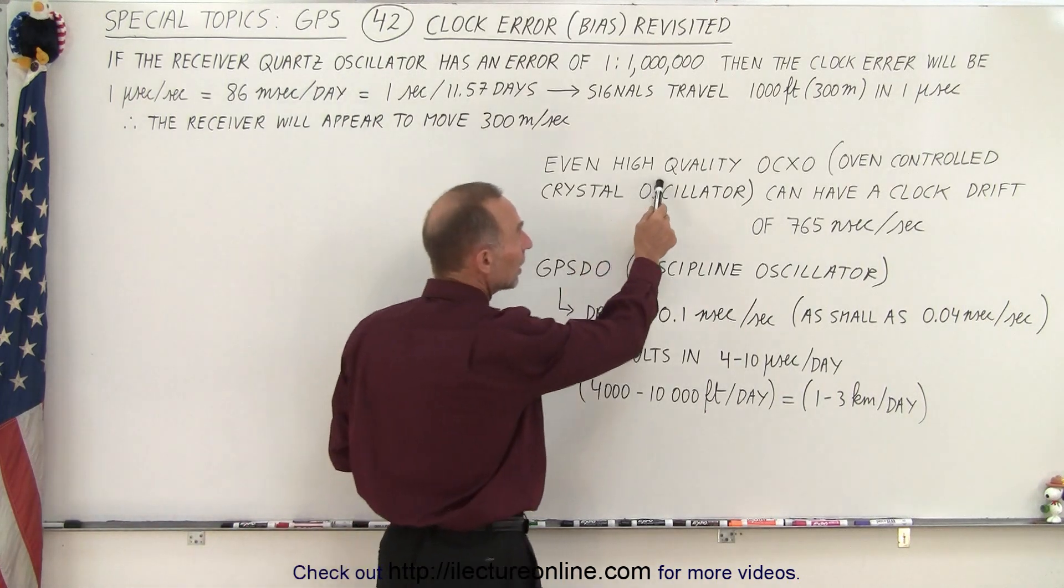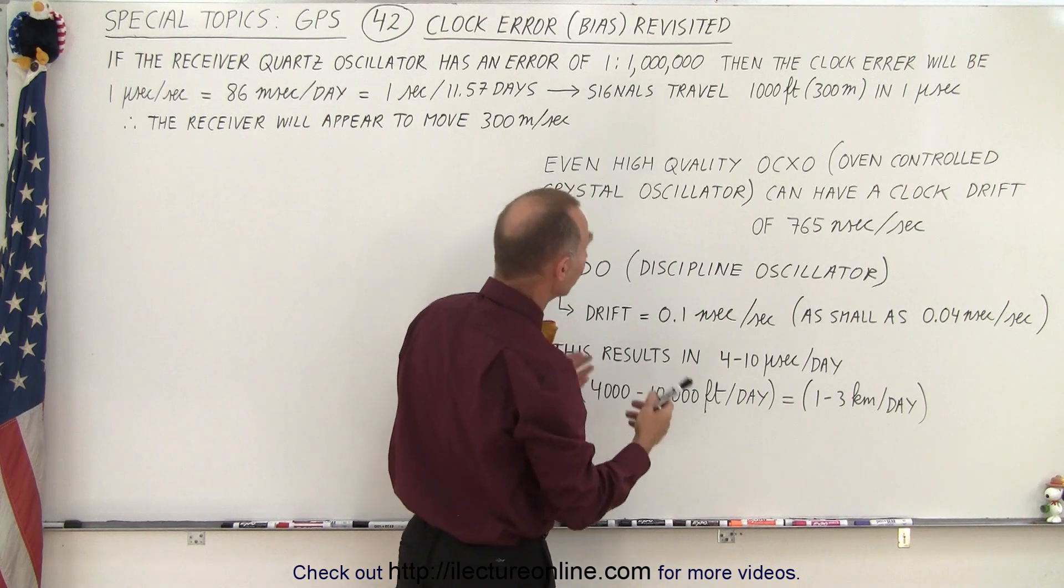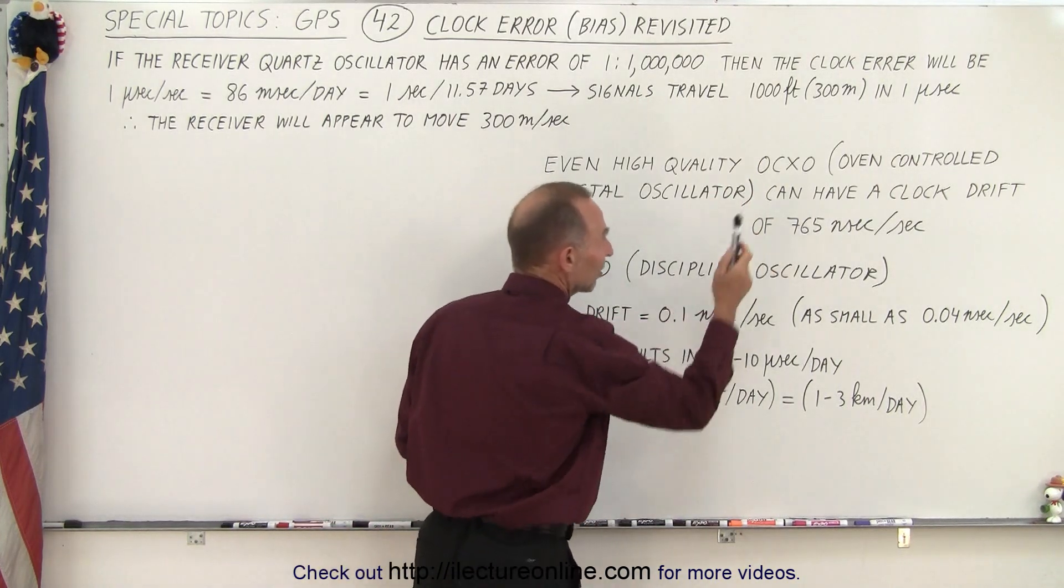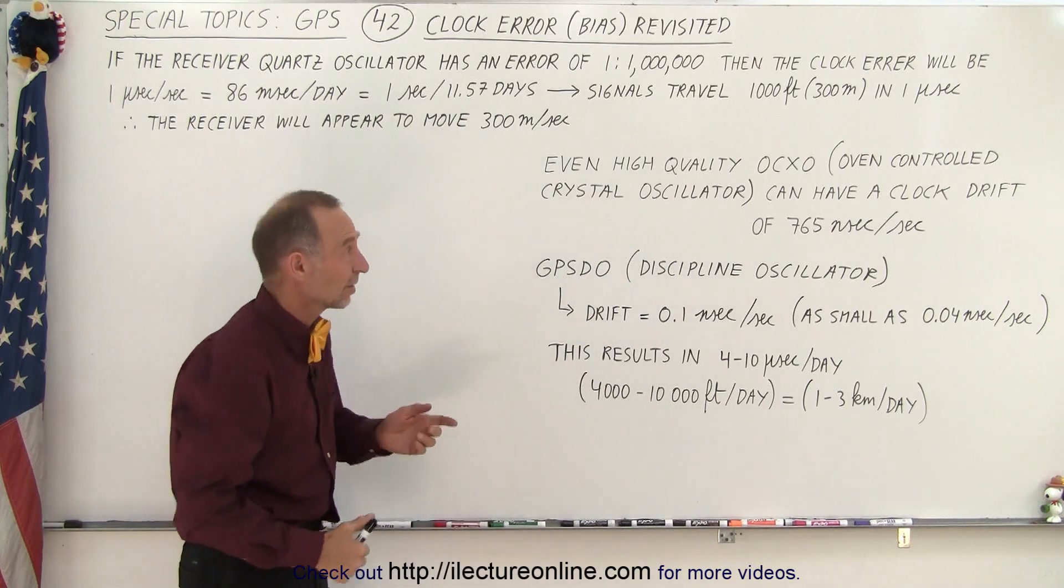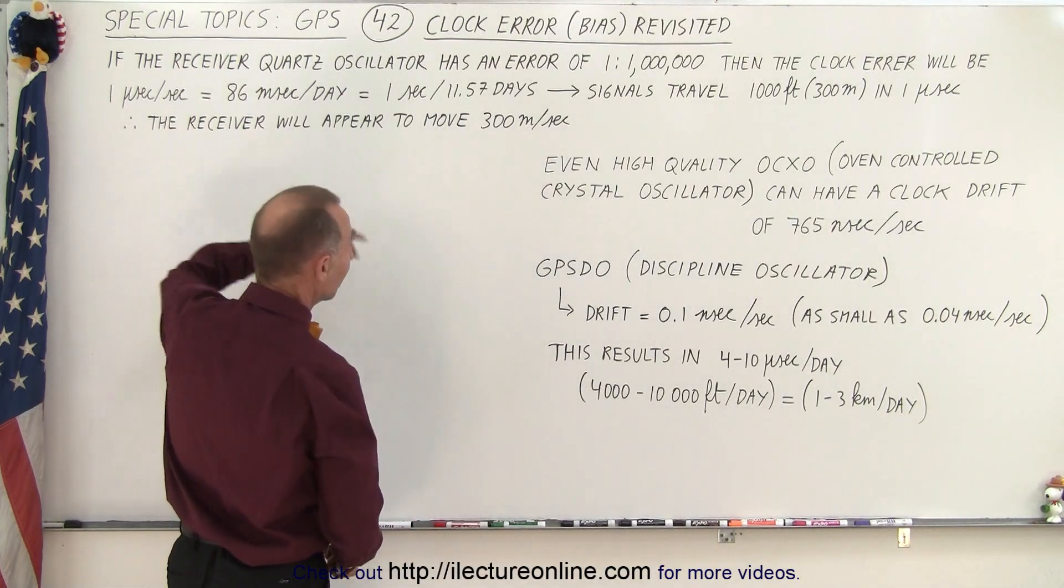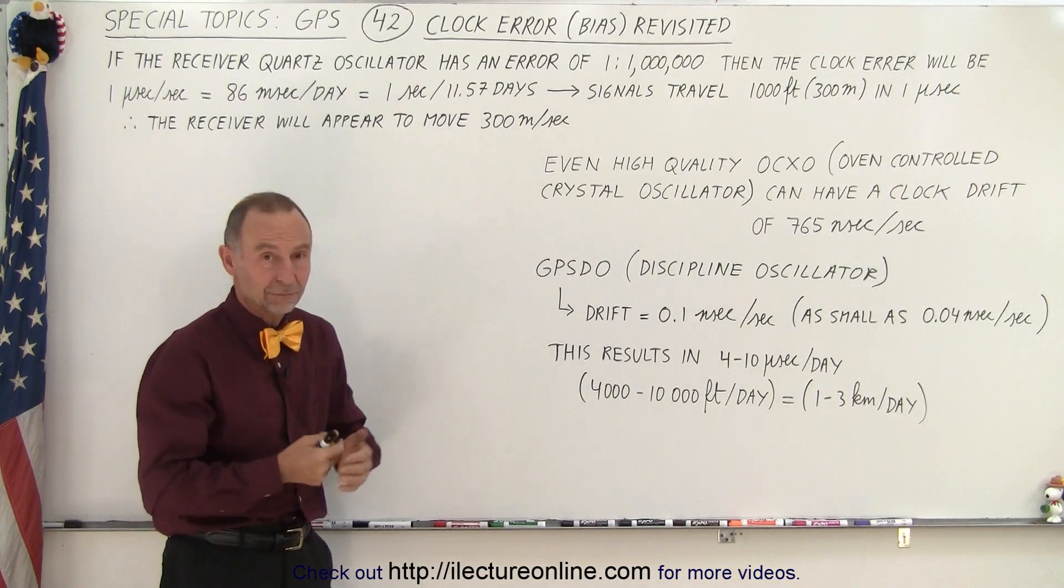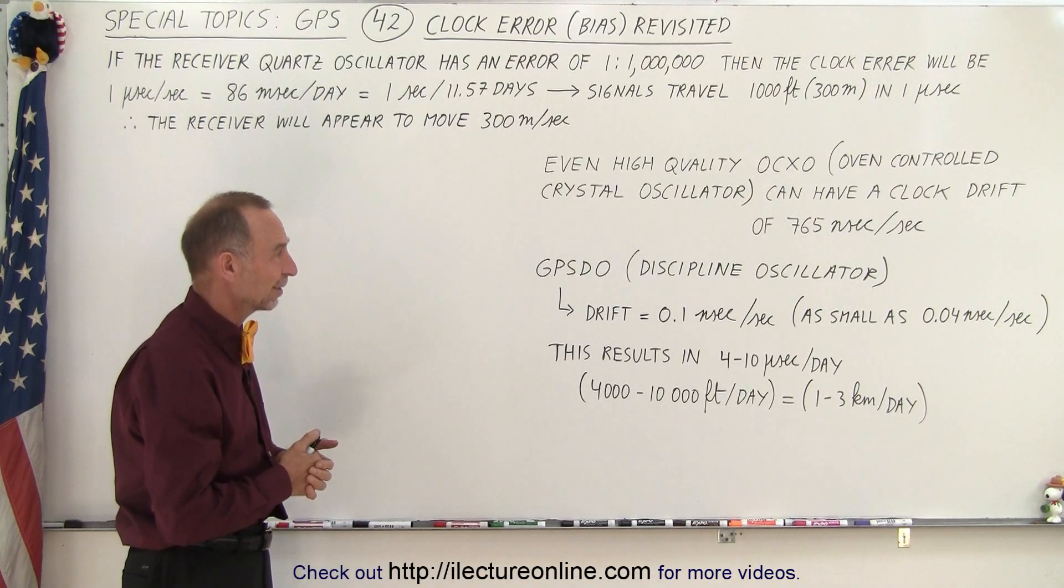Now, even high-quality OCXO oscillators, oven-controlled crystal oscillators, can have clock drift of about 765 nanoseconds every second. So that's not a lot better than our example, and you'd still be way off. You'd still be zipping along at almost half the speed of a jetliner.